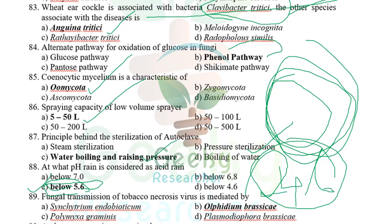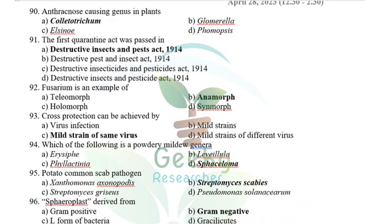Anthracnose-causing genera include Colletotrichum, Glomerella, and Elsinoe. I selected Colletotrichum as the primary anthracnose genus. The first quarantine act passed in India is the Destructive Insects and Pests Act (DIPA) 1940. The US Federal Quarantine Act was passed in 1912 and the equivalent in India became the Destructive Insects and Pests Act 1940.